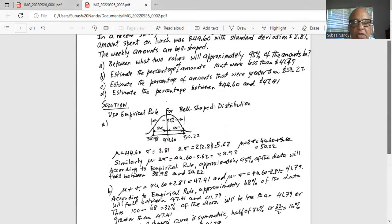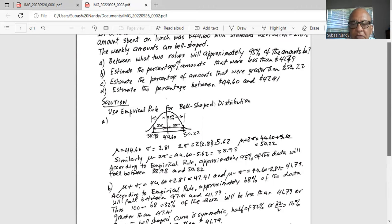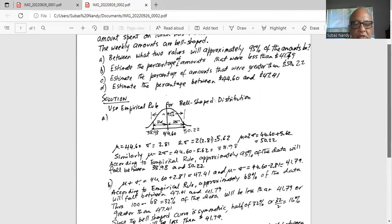So 2 times sigma is 2 multiplied by 2.81 is 5.62. So mu minus 2 sigma is 44.60 minus 5.62 is 38.98 and mu plus 2 sigma is 44.60 plus 5.62 or 50.22.